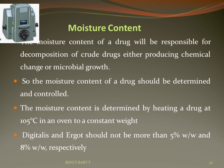Moisture content of a drug is responsible for decomposition, either producing chemical change or microbial growth, so it must be determined and controlled. It can be determined by the loss-on-drying method, which involves heating the drug at 105°C in an oven to a constant weight, or by using a moisture balance. For example, digitalis and ergot should not have a moisture content of more than 5% w/w and 8% w/w, respectively.